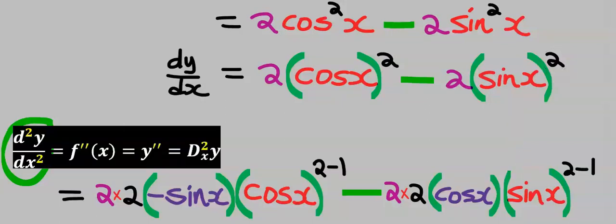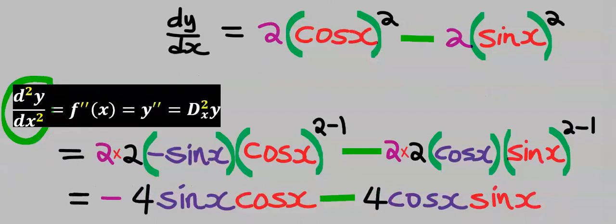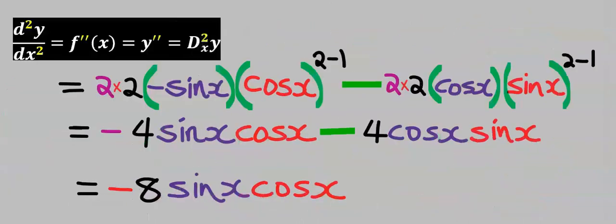Now we have obtained the second derivative. Next, we are going to simplify our result by opening up the brackets. Minus 8sin(x)cos(x) becomes our final answer, which is the second derivative.